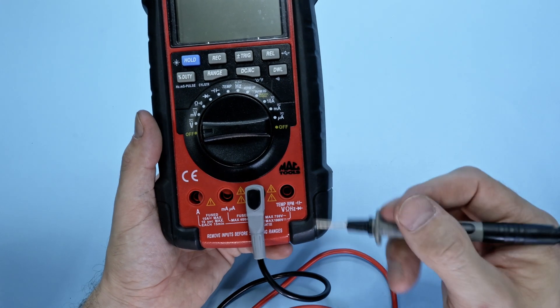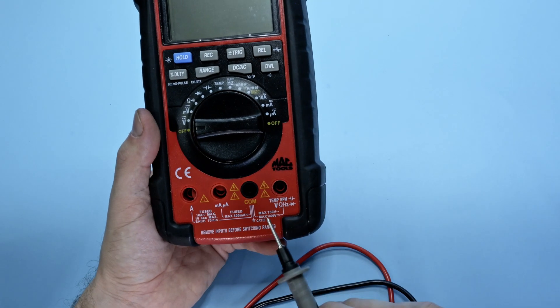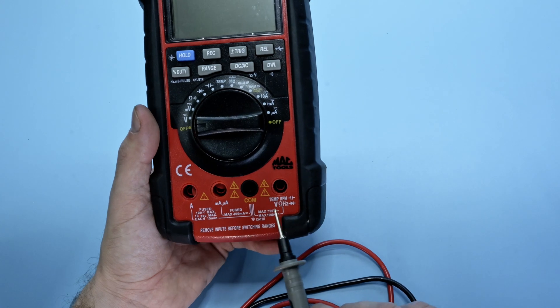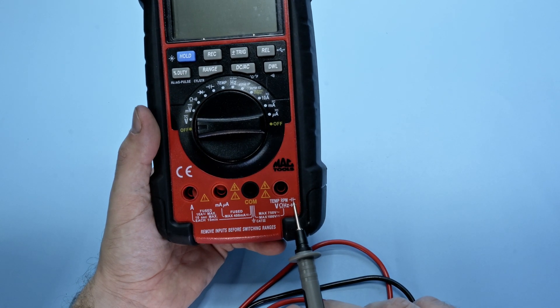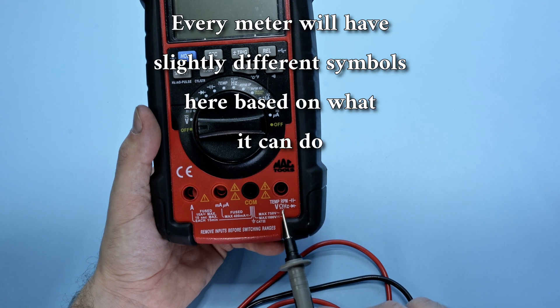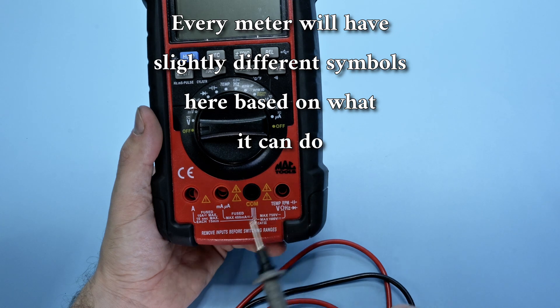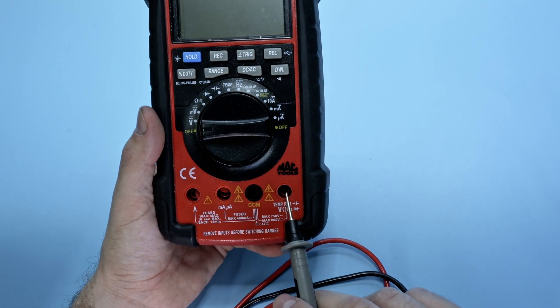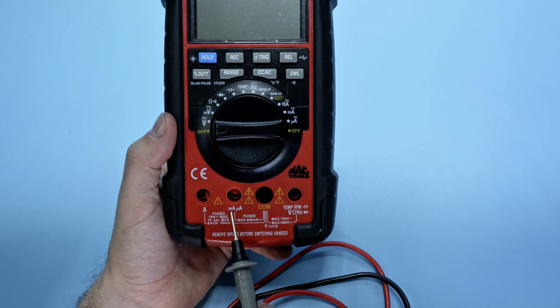And everything is labeled and coded with schematics or with symbols. So this port right here is for my temperature, my RPM. That little symbol right there is a capacitor. I've got a diode. I've got hertz for frequency. I've got resistance. And I've got voltage. So all of those are going to be red with my red lead in this port. And then over here on the left of my meter, I have amperage, milliamps, and microamps.